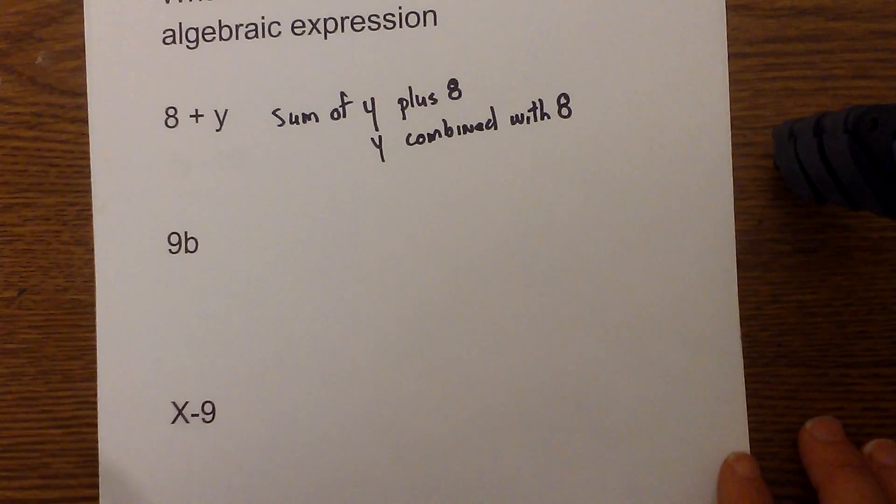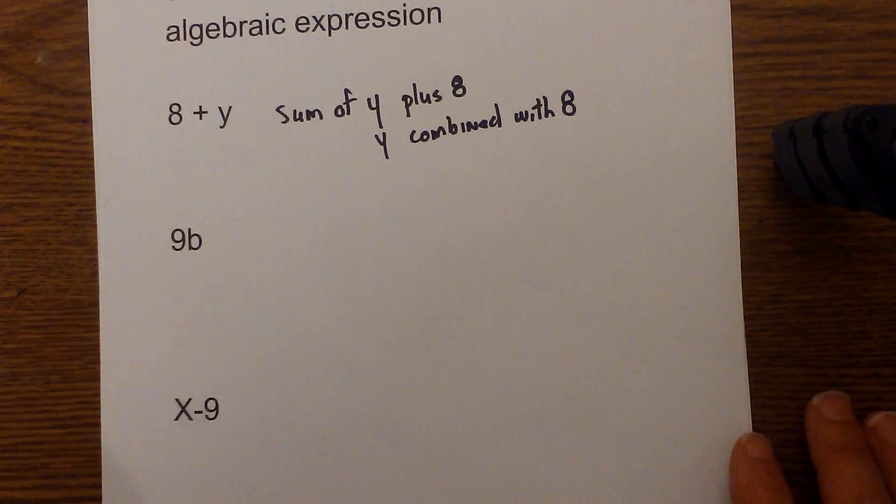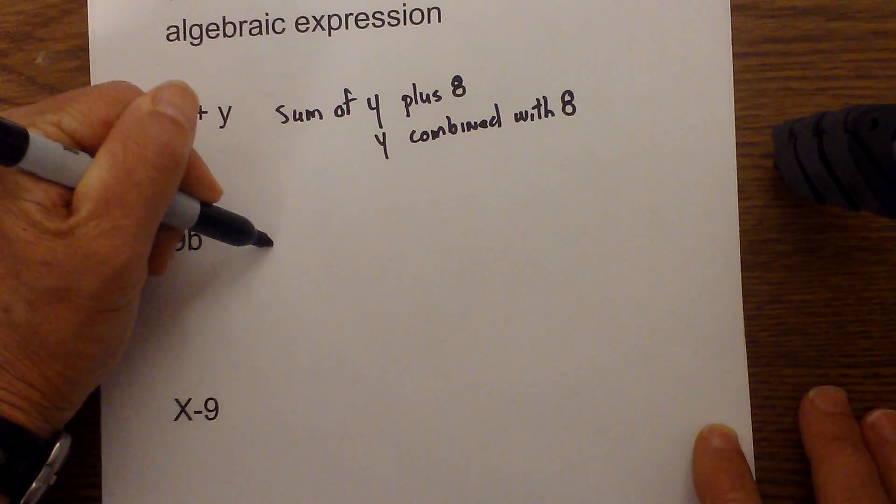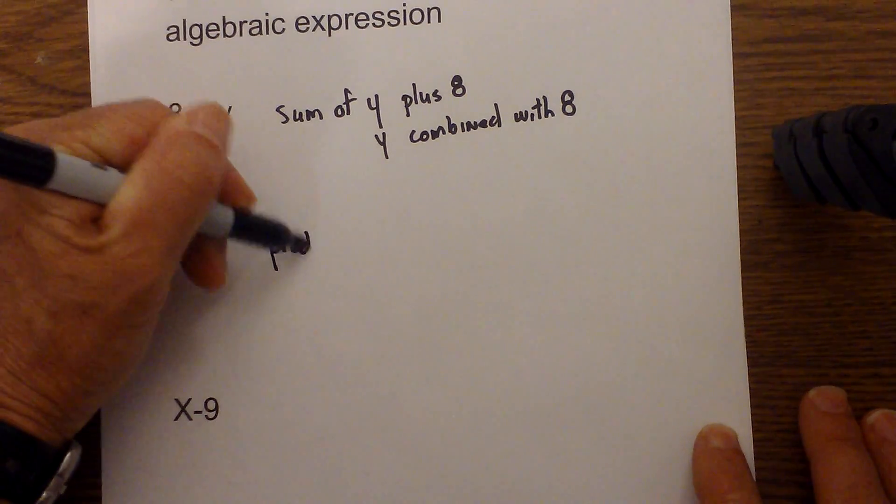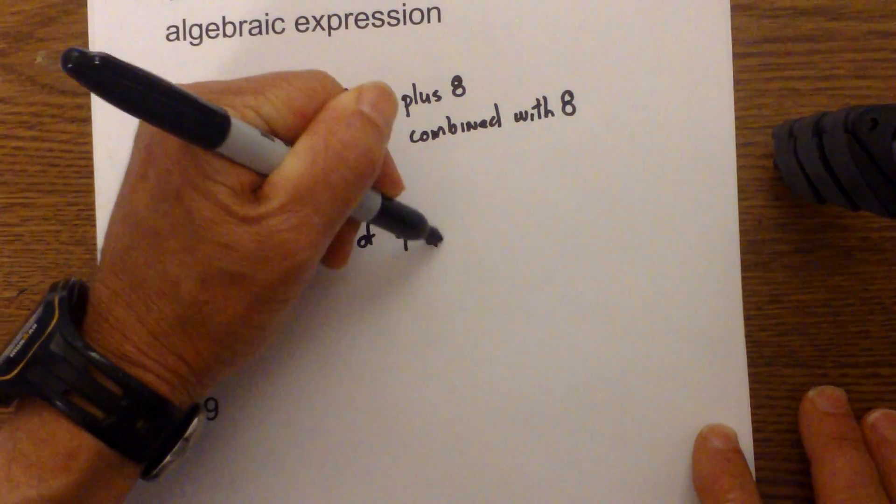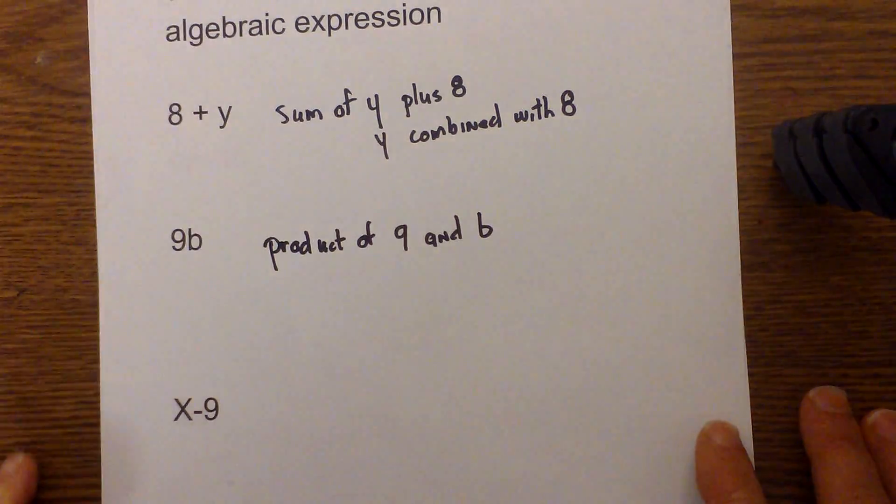Next let's move down to nine b, and with nine b I'm going to use the word multiplication. A lot of times product is used, so I'm going to use the product of nine and b.